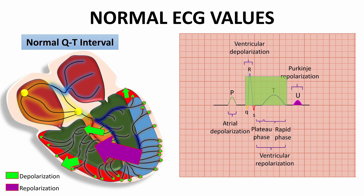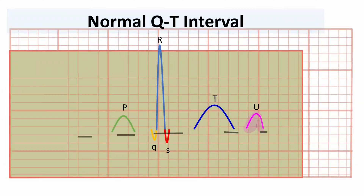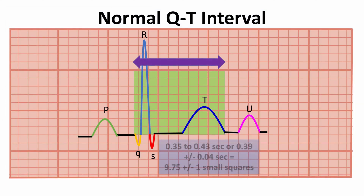The normal QT interval is in the range of 0.35 to 0.43 sec, or 0.39 ± 0.04 sec, which equals 9.75 ± 1 small squares.